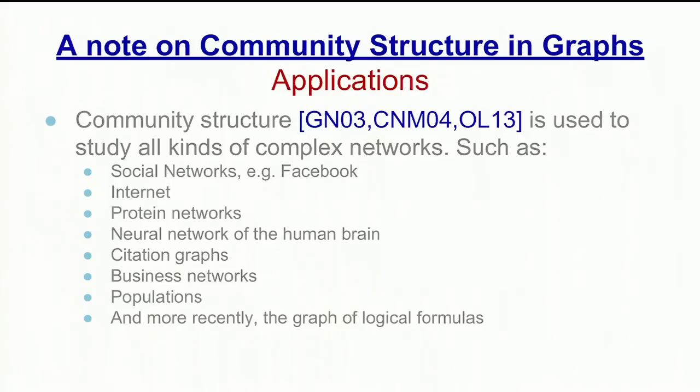A community is a subgraph that has more internal edges than outgoing ones. The community structure characterizes how well clustered a graph is. Community structure has been used to study all kinds of complex networks, such as social networks like Facebook, the Internet, and more recently, the graph of logical formulas, as well as an enormous number of other domains.